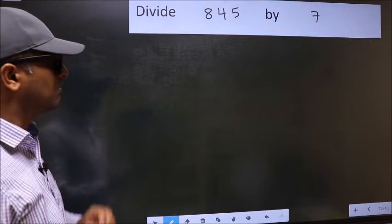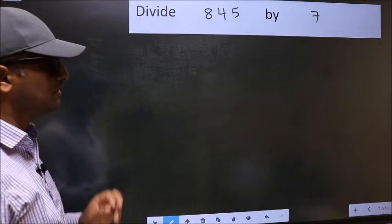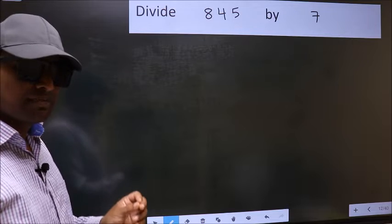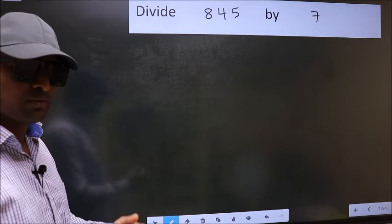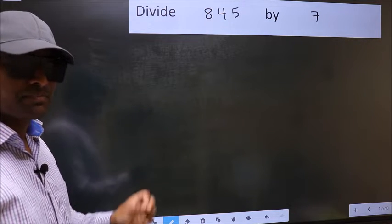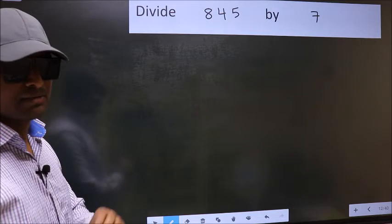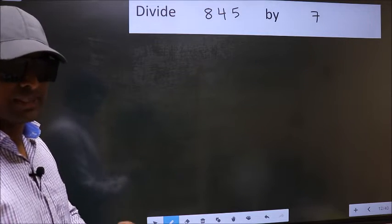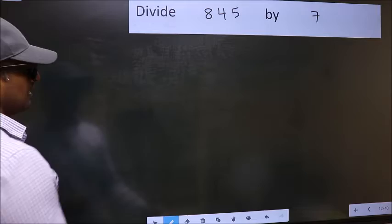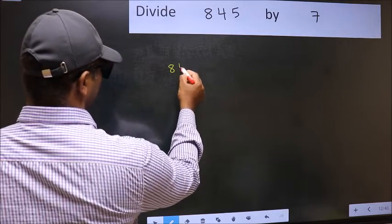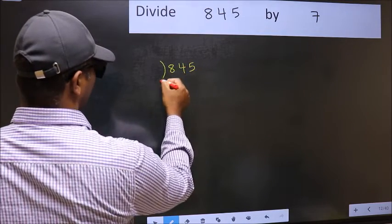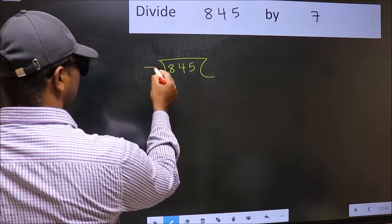Divide 845 by 7. While doing this division, many do this mistake. What is the mistake that they do? I will let you know. But before that, we should frame it in this way. 845 and 7 here.